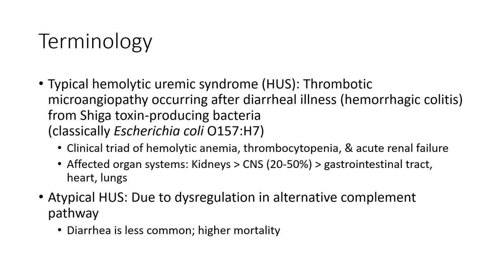Affected organ systems include the kidney, CNS in 20 to 50 percent of cases, the gastrointestinal tract, heart, and lung. Atypical hemolytic uremic syndrome involves dysregulation of the alternative complement pathway. Diarrhea is less common in atypical HUS and it carries higher mortality.